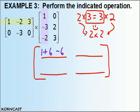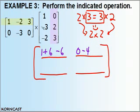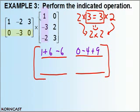Now row 1, column 2 — I move my color strip to column 2 and repeat. First times first: 1 times 0 is 0. Second times second: negative 2 times 2 is negative 4. Third times third: 3 times 3 is 9. Add them all up. Now I'm done with the first row, so I move the yellow strip down to row 2 and move my column strip back to column 1. Row 2, column 1: 0 times 1 is 0. Negative 3 times negative 3 is positive 9. 0 times negative 2 is 0. Add them up.